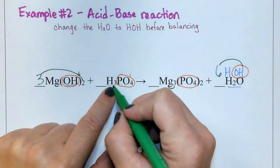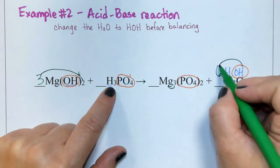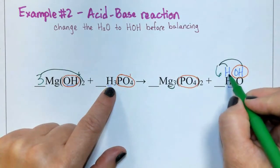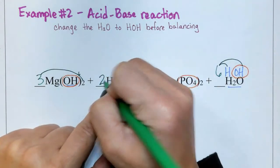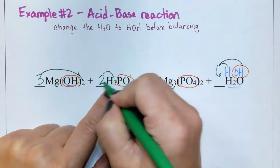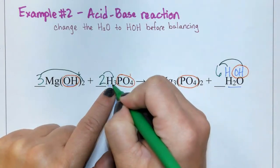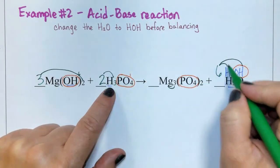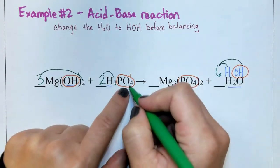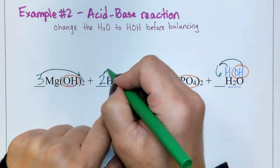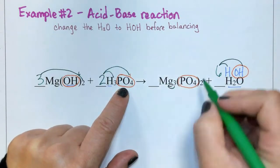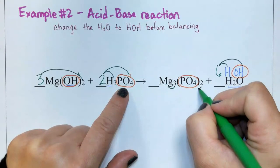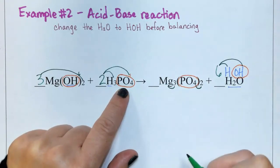Then we have three hydrogens on the left and six hydrogens on the right. So to fix it, I'll put a two here, and that gives me two times three is six hydrogens to go with these six hydrogens. Finally, two times one is two phosphates, and here we have two phosphates.